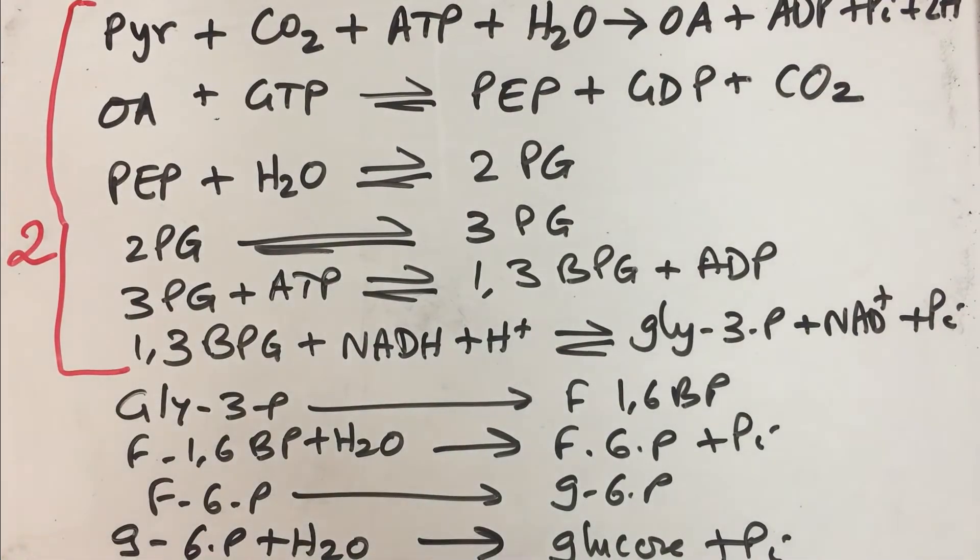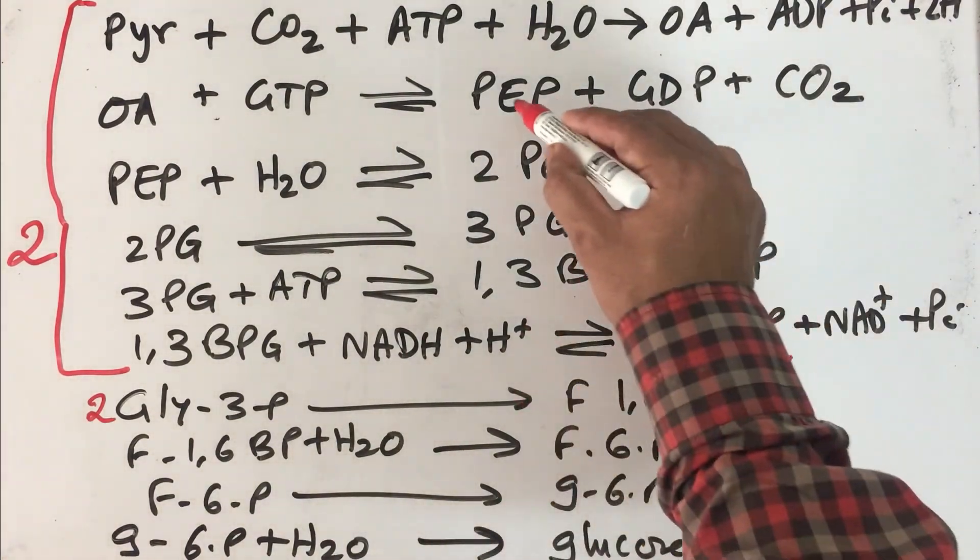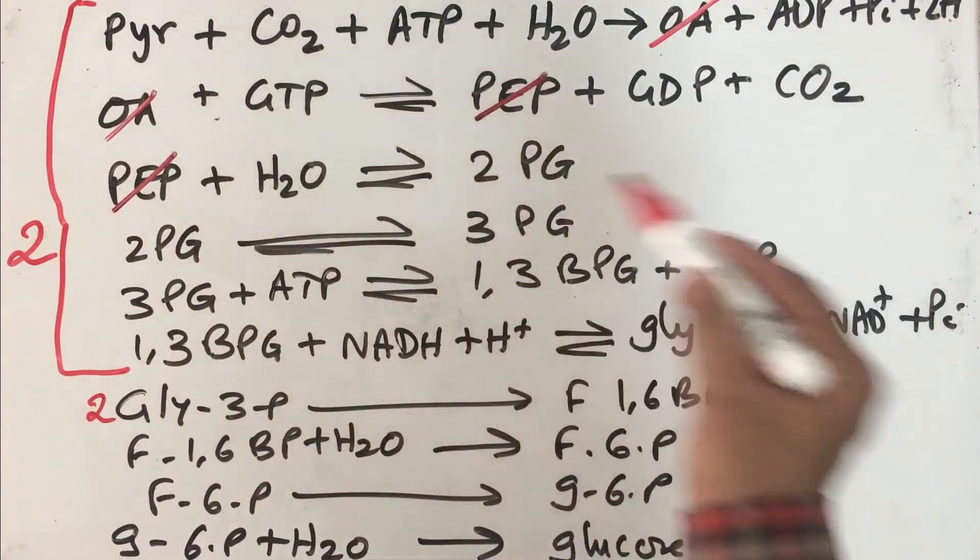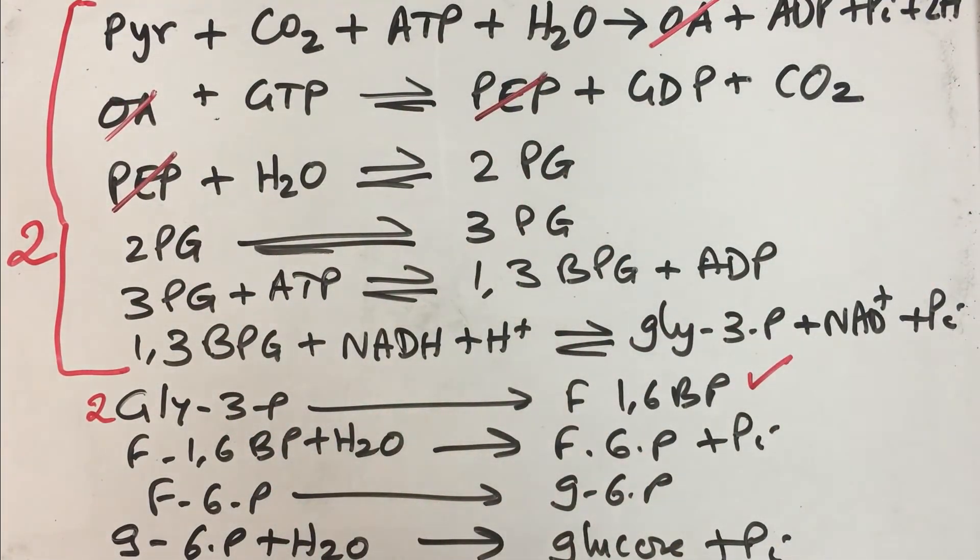Now remember that from here to here, it has to be repeated twice. Each of these molecules will be two such molecules. Then only two such glyceraldehyde 3-phosphate can join together to form one molecule of fructose 1,6-bisphosphate. Because each of these are 3-carbon compound and this is a 6-carbon compound. So now whatever is common, you need to keep canceling. You write OA cancel, OA cancel, PEP cancel, PEP cancel. So you keep on canceling it. And at the end of it, whatever is remaining, let us write down whatever is remaining.